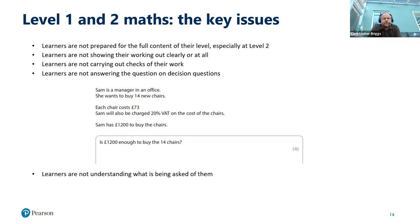The next issue is that learners are not showing their working out clearly, or at all, and this is a problem. Learners will get process marks at times throughout the assessment, so they do need to ensure their working out is as clear as can be. Especially when considering the next issue: learners are not carrying out checks of their work. There are specific questions on checking work, and if asked to do a reverse calculation without having shown prior calculations, they won't be able to access those marks.